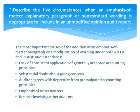Number 2 is Substantial Doubt About Going Concern. Examples include significant recurring operating losses, working capital deficiency, inability of the company to pay its obligations as they come due, loss of a major customer, occurrence of uninsured catastrophes, or legal proceedings that might jeopardize the entity's ability to operate.